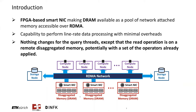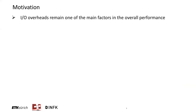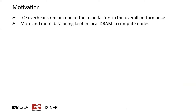So what motivated us to design the platform? Well, one of the main bottlenecks databases need to overcome is I/O overheads. And although we do have faster storage in modern days — SSDs, NVMEs — the I/O overheads still remain one of the major factors in the overall performance. To minimize these overheads, databases tend to keep more and more data in local fast DRAM memory in compute nodes.